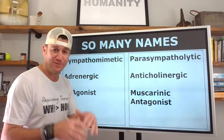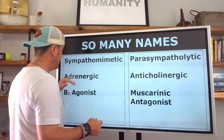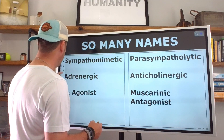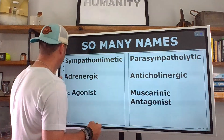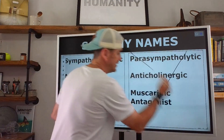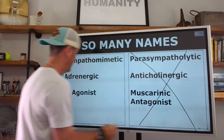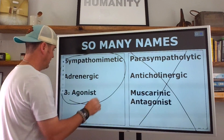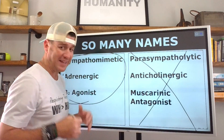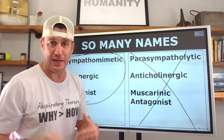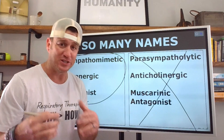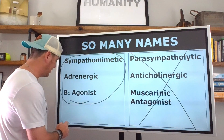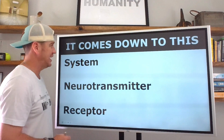Now for the sake of this video, we are only going to be focusing on the sympathomimetic, the adrenergic, and the beta-2 agonist. I'm going to show you what all these words mean and what drugs we're talking about in this classification.